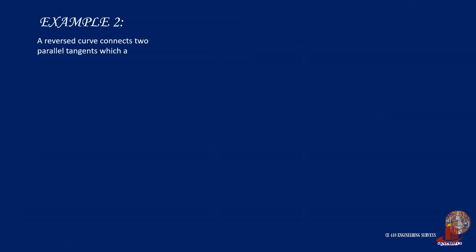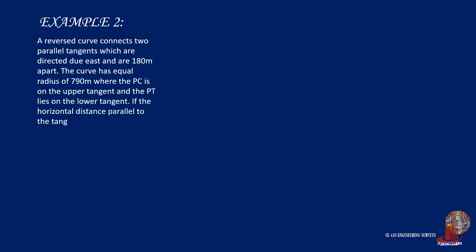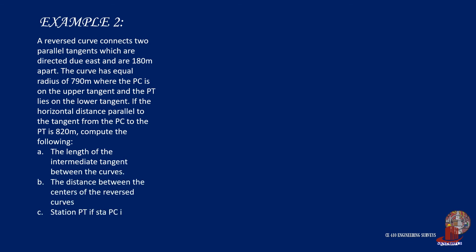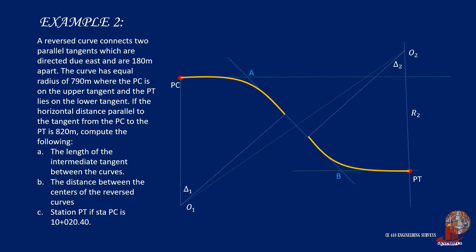The second example. A reverse curve connects two parallel tangents which are directed due east and are 180 meters apart. The curve has equal radius of 790 meters where the PC is on the upper tangent and the PT lies on the lower tangent. If the horizontal distance parallel to the tangent from the PC to the PT is 820 meters, compute the following. A, the length of the intermediate tangent between the curves. B, the distance between the centers of the reverse curves. C, station PT if station PC is at 10 plus 20.40. In this example, there is an intermediate tangent between the simple curves. Distance of parallel tangents is 180 meters where the radius is 790 meters. Horizontal distance PC to PT is also given as 820 meters and the station PC is at 10 plus 20.40.